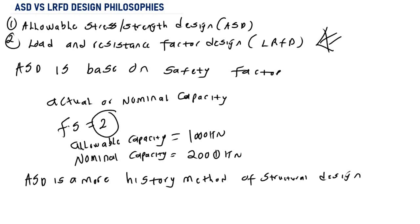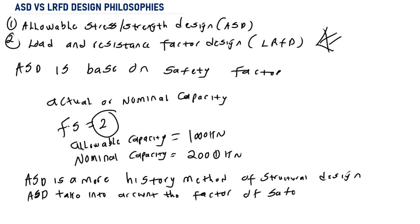Because LRFD takes into account uncertainties associated with both the load and the resistance, structural designers tend to prefer LRFD over ASD. To summarize the key difference: ASD accounts for uncertainty using a factor of safety, while LRFD takes into account the uncertainties of both the load and the resistance.